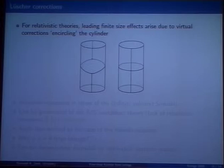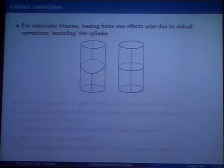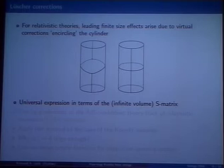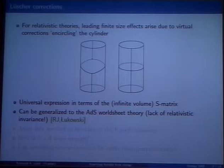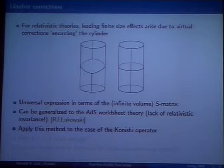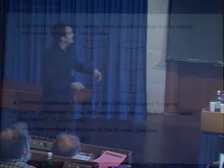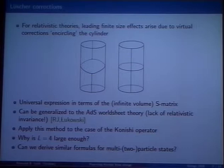For relativistic theories, the leading finite-size effects arise mainly due to virtual corrections and virtual particles cycling the cylinder. There are basically two types of graphs: a virtual particle that goes along the cylinder and scatters on the particle, with scattering given by the exact S-matrix; or an excitation can split into two particles and then recombine. Lüscher gave explicit expressions for each of those graphs written in terms of the S-matrix. This can be generalized to AdS worldsheet theory where we do not have relativistic invariance but have a modified dispersion relation. However, Lüscher derived formulas only for single-particle states, so we need to extend them to two-particle states like the Konishi operator.